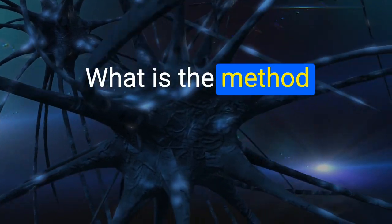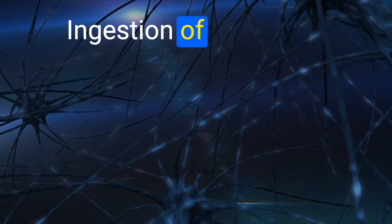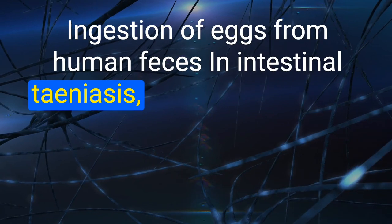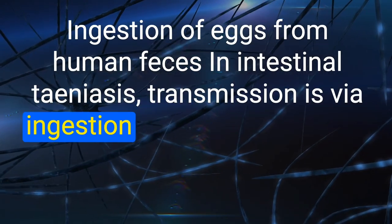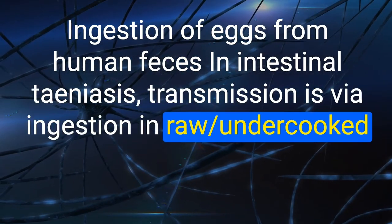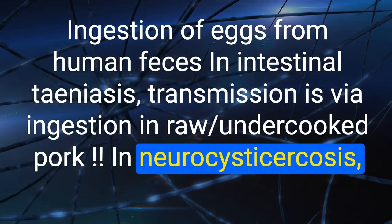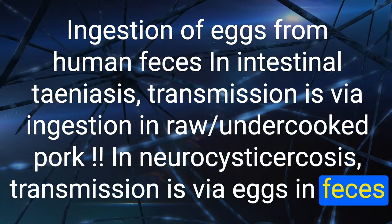177. What is the method of transmission in neurocysticercosis? Ingestion of eggs from human feces (intestinal teniasis). Compare: intestinal taeniasis is via ingestion of raw, undercooked pork; neurocysticercosis is via eggs in feces.